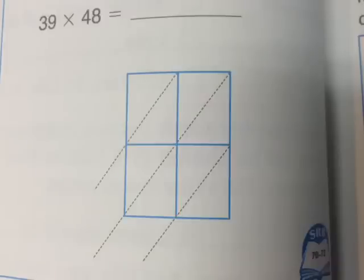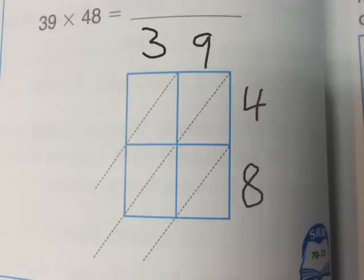Hi third graders, before we've been using the lattice method with two digits times one digit. Now we're going to try for the first time two digits times two digits, but nothing changes too much. So here we have 39 times 48. We write 39 on one side and we write 48 on the other side.